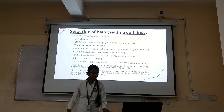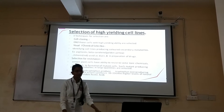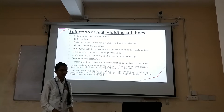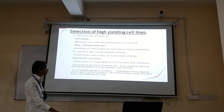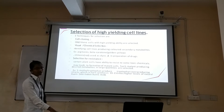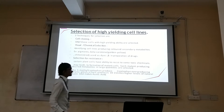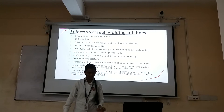For example, 5-methyltryptophan produces tryptophan-overproducing strains which in turn synthesize 10 to 15 times higher levels of the natural auxin IAA, indole-acetic acid.